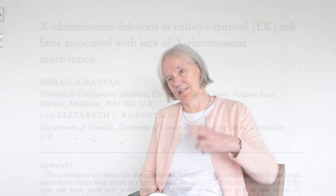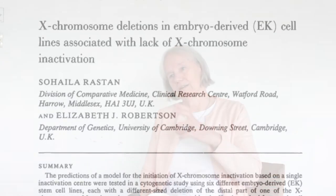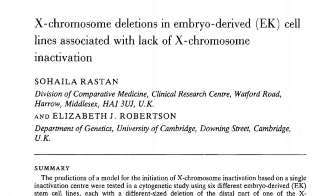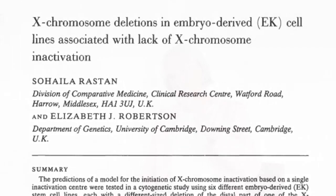But still, nonetheless, it was very interesting, and that led to a follow-up experiment where, together with Sahela Raston, we discovered that these pathogenetic ES cells, which were XX, would specifically delete parts of the X chromosome. We used that as a method to actually start to roughly map the position of the X inactivation centre. That was the second Development paper in 1986.